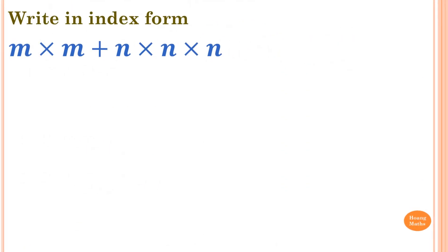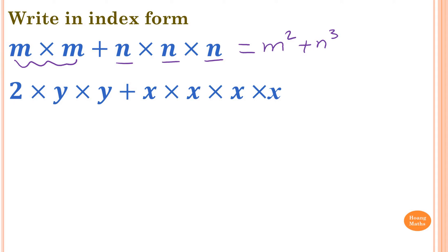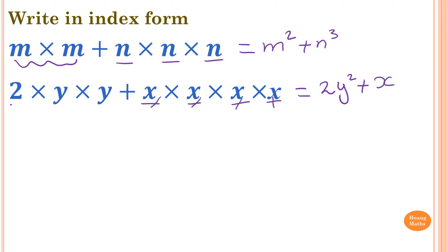Now let's add a bit of flavor. We want to write these in index form. First: M times M, which is M squared, plus N times N times N, which is N to the power of 3. Next: 2 times Y times Y, so we write 2 first, and Y times Y is Y squared. Then X times X times X times X — counting 1, 2, 3, 4 — which is X to the power of 4.